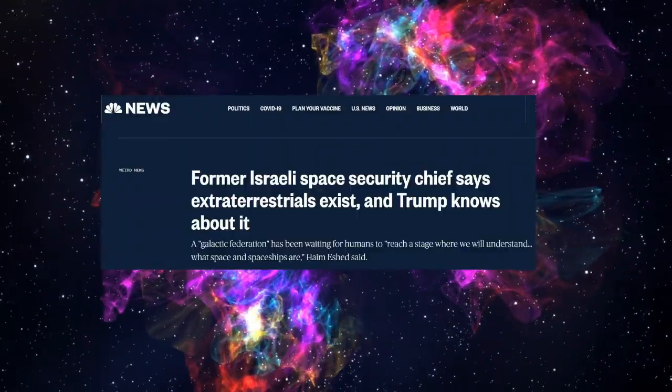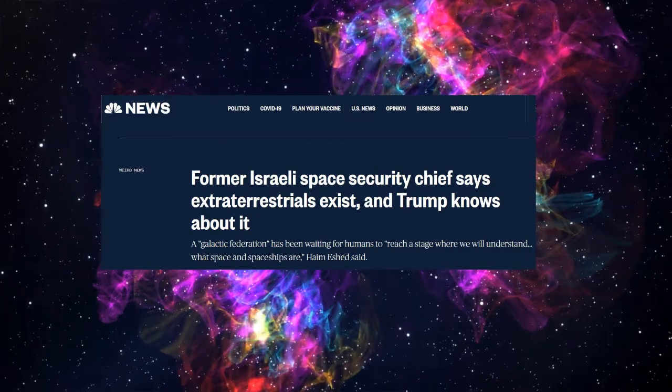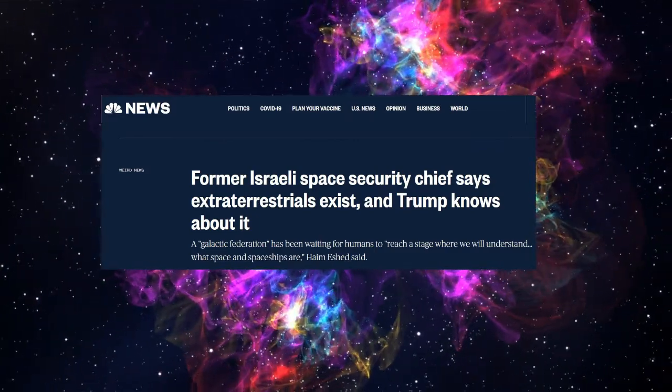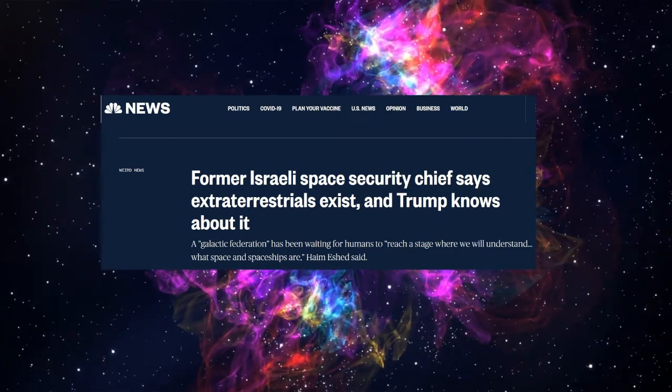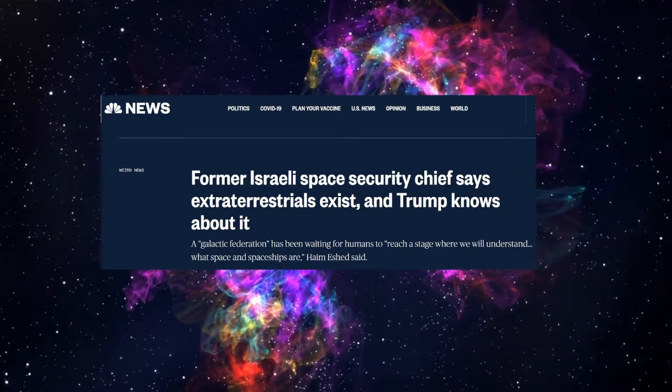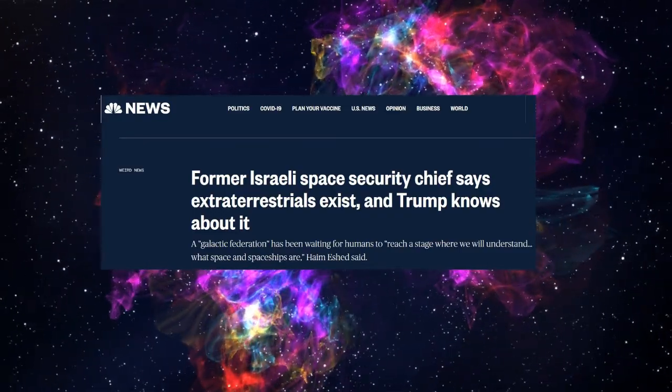And he had a lot more to say. Amongst his many revelations was that humans have been working with aliens on a special base on Mars and that Donald Trump was about to reveal their existence, but alien intervention prevented him from doing so. Humanity, according to Eshed, apparently is not ready yet.